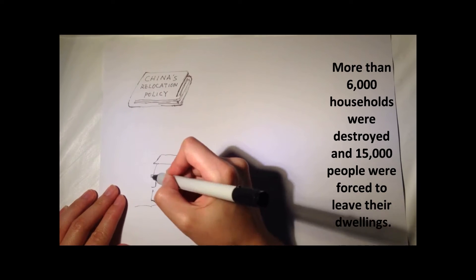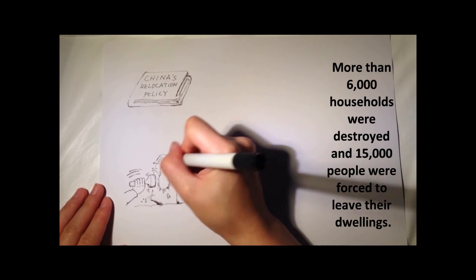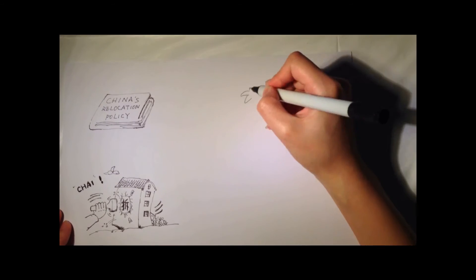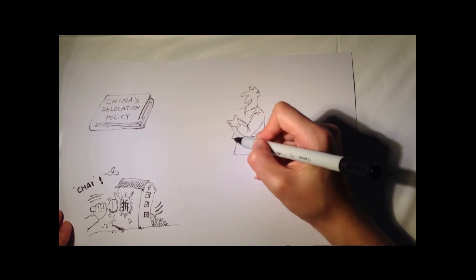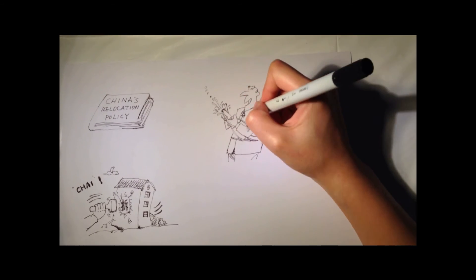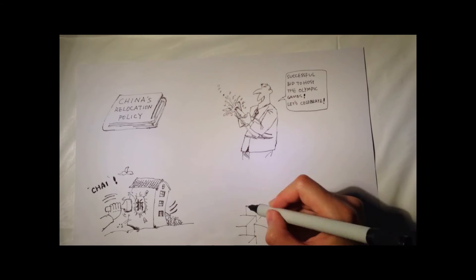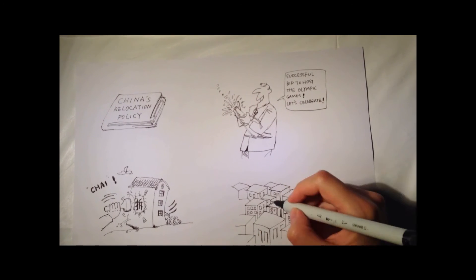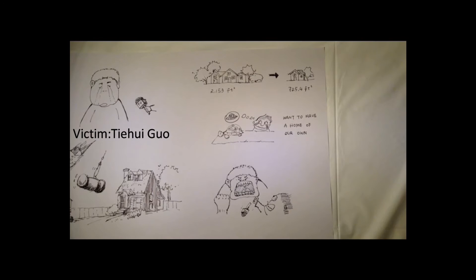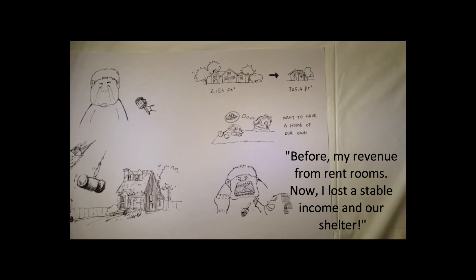China's relocation policy leaves citizens no choice but to move. The central government decides to demolish certain areas and the people who live in those areas are forced to relocate. The process begins with the word CHI, to be demolished, sprayed on the wall of buildings that are going to be destroyed.